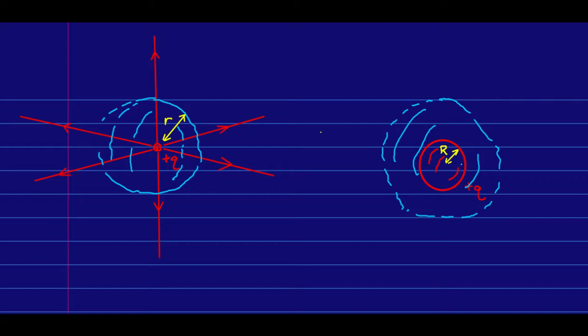The sphere certainly has spherical symmetry. And now all the same arguments apply. This sphere has spherical symmetry, and so its field must have spherical symmetry.